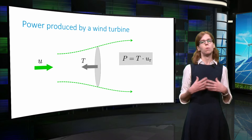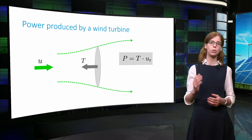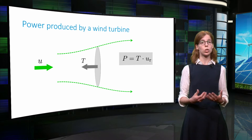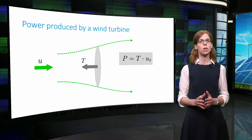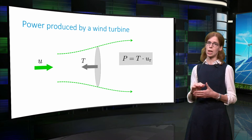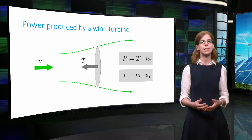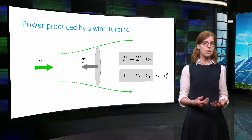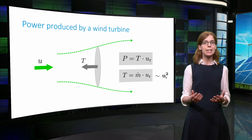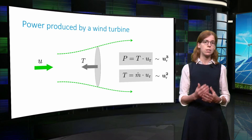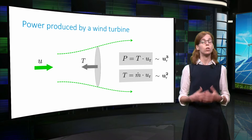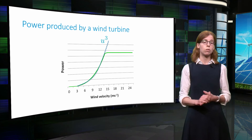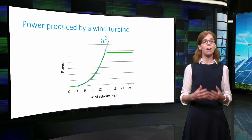In a previous video, we saw that the power extracted by the wind turbine equals the force exerted by the flow on the rotor times the flow velocity at the rotor. An important concept in fluid mechanics is the notion of conservation laws. In particular, mass is conserved when the fluid moves along the stream tube shown by the green dashed line. It can be shown that this implies that the force exerted by the rotor equals the mass flow rate ṁ times the velocity at the rotor. Since the mass flow rate is itself a function of the velocity, the force is a function of the velocity squared. And by inserting this result in the definition of the power, it follows that P is a function of the cube of the velocity. This is an important result to keep in mind: across a wide range of wind speeds, the power produced by a wind turbine varies with the cube of the wind speed.